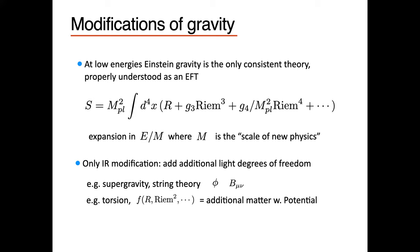There should be higher derivative corrections with some Wilson coefficient, suppressed by some scale M — the scale of new physics. The only other thing we can do at low energies is add additional light degrees of freedom. In supergravity or string theory, for instance, we have an axial dilaton, a B field, and other massless fields. Similarly, other modifications of gravity like F(R) theories can be rewritten using a scalar field coupled to gravity.